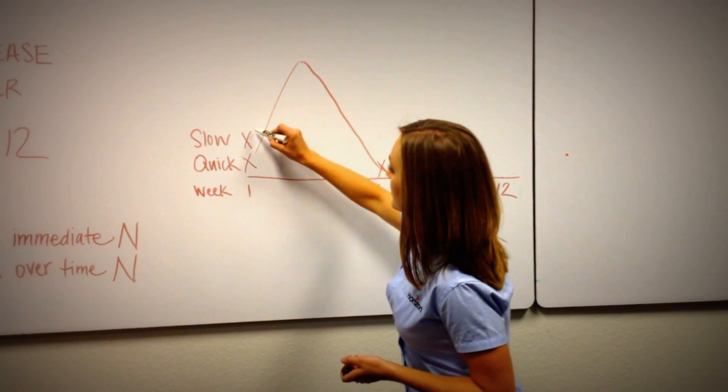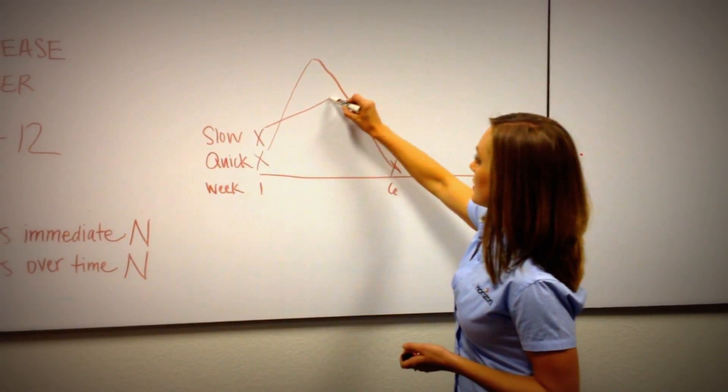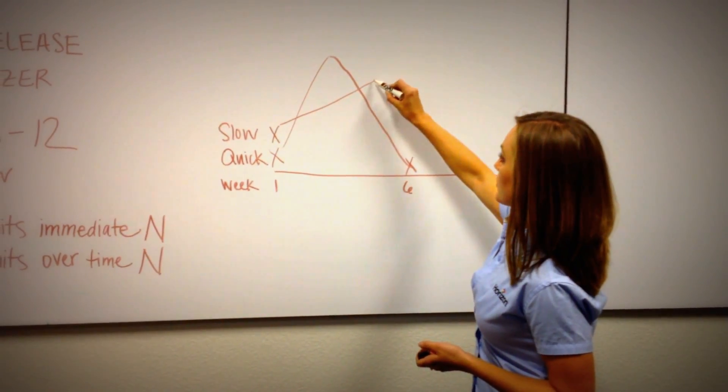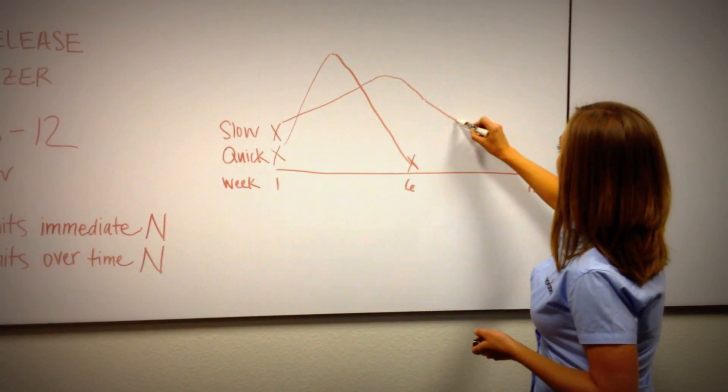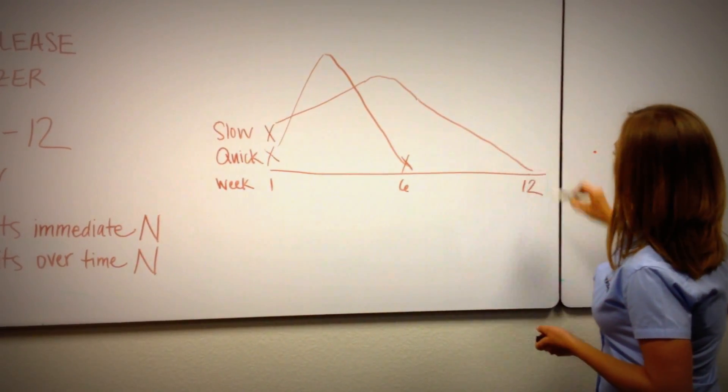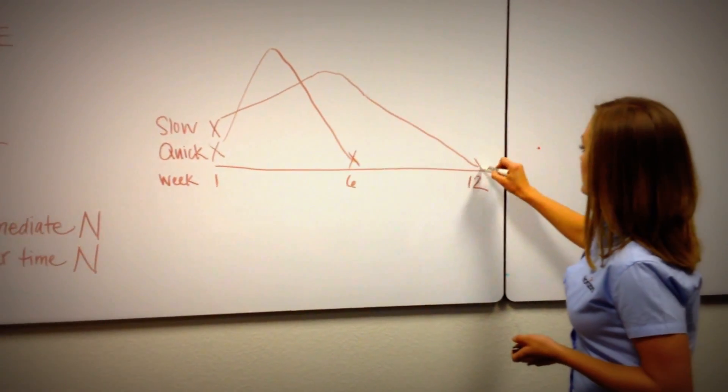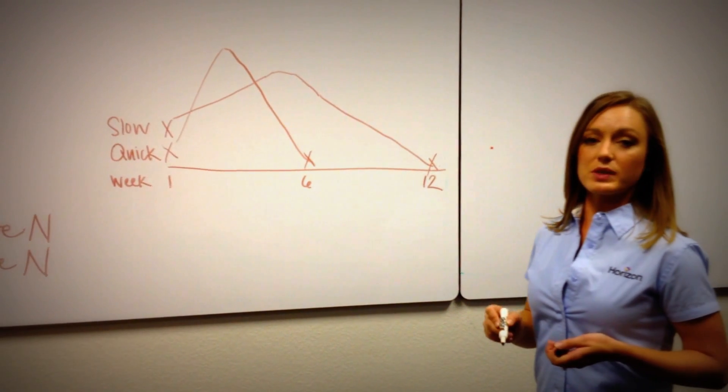Fertilize in week one, a much less steep curve of spike. It's growing consistently but not to where you're mowing a bunch, and then it tapers off and you're not having to fertilize until about 12 weeks later.